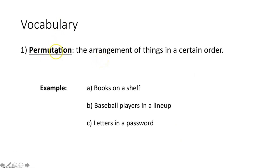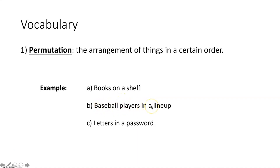The first vocabulary term is a permutation — that would be the arrangement of things in a certain order. Down here you can see three examples involving permutations. First, we have books on a shelf; the order you arrange them in would be one permutation of those books. A baseball batting order from one through nine is a permutation, and the arrangement of letters in a password would be one permutation of those given letters.